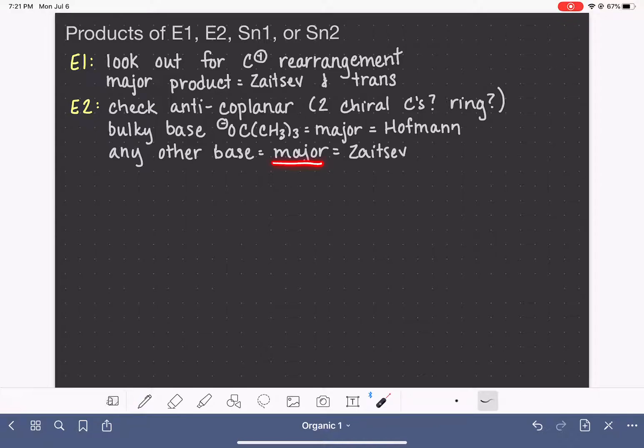Now remember, this is major, meaning that we do make the other products as well. This is just going to be the major product. And then whether we're making the Hofmann or the Zaitsev product, always, regardless, the major product is trans unless we are dealing with an anti-coplanar situation, which is going to force the formation of either the Z or the E stereoisomer.